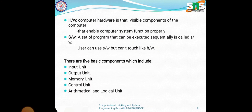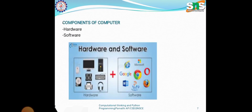Then software. A set of programs that can be executed sequentially is called software. A user can use software but cannot touch it like hardware. Examples of software include Google, Chrome, Word, and Microsoft applications.